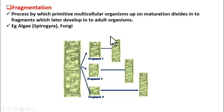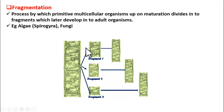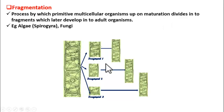So that is fragmentation — dividing into several bits or fragments upon maturation, and then each bit or fragment developing into an adult organism.